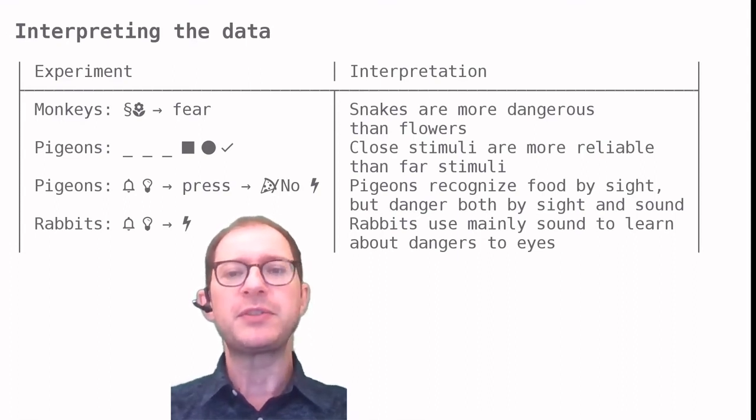The landmark experiment is also easy to interpret this way, as landmarks that are closer to a goal are generally more reliable than landmarks further away. The results of the other two experiments are not as obvious, but we can still make good guesses as to why animals showed certain biases. For example, pigeons use vision to find food, primarily, so it makes sense that they learn more readily about visual than sound stimuli when learning to press a lever for food. When avoiding danger, which was a shock in the experiment, on the other hand, both sights and sounds can be helpful, and in fact there was no great difference in that case.